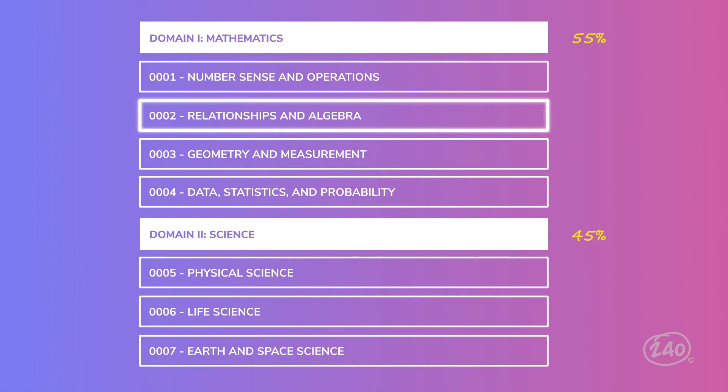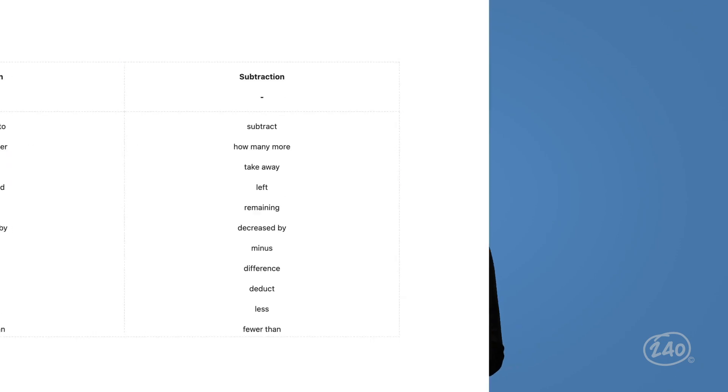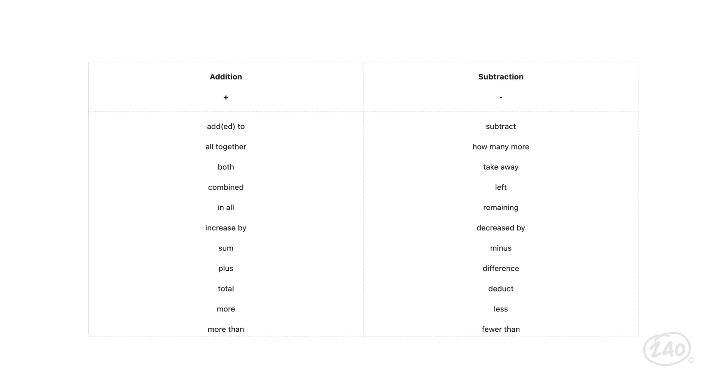Let's look at the next competency. Competency two is relationships and algebra. You'll need to be comfortable solving for variables and modeling real-world situations. Right now, let's look at taking a verbal description and translating it into an algebraic expression.